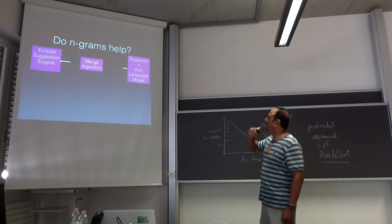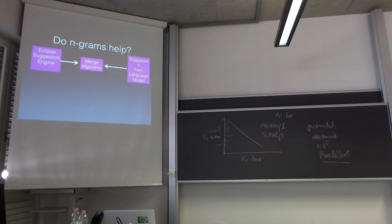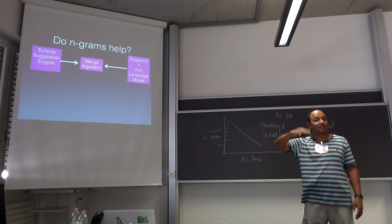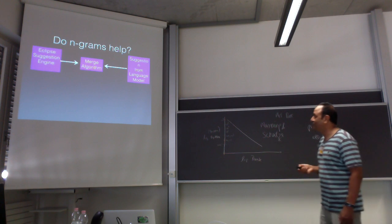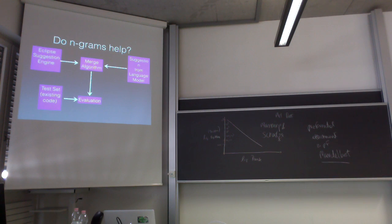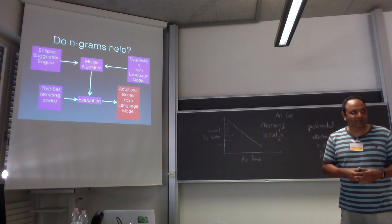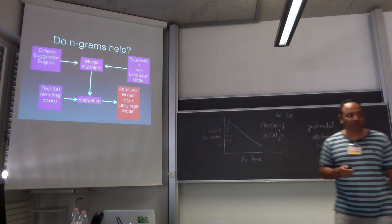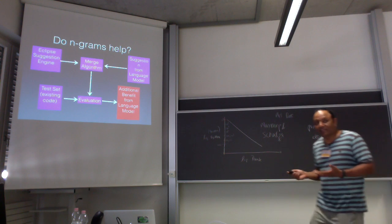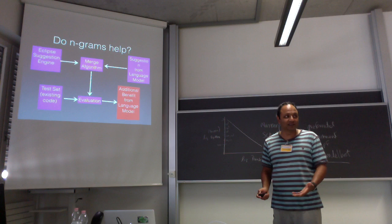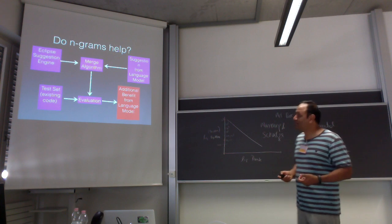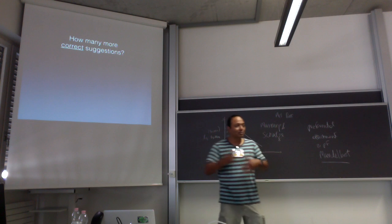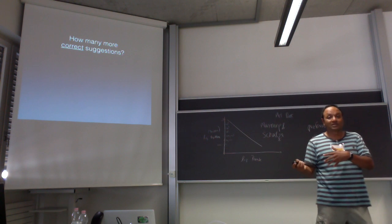What we do is take the Eclipse suggestion engine, which provides suggestions based on type information, and a statistical language model which provides suggestions based on n-gram statistics. We combine them and at every point try to make the best list of suggestions. We can take a corpus of code and see how this combined engine works — whether the language model is providing any additional benefit beyond Eclipse, which already has so much information.